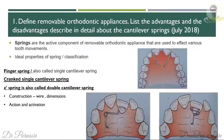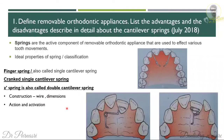Regarding cantilever springs: springs are active components of removable appliances used for various tooth movements. You can write about the ideal properties or classification of springs. The finger spring is also called the cantilever spring. You have to explain these springs — the wire used, dimensions, design, how it is bent, the action, indications, and activation. How do you activate these springs? Diagrams are very important here.